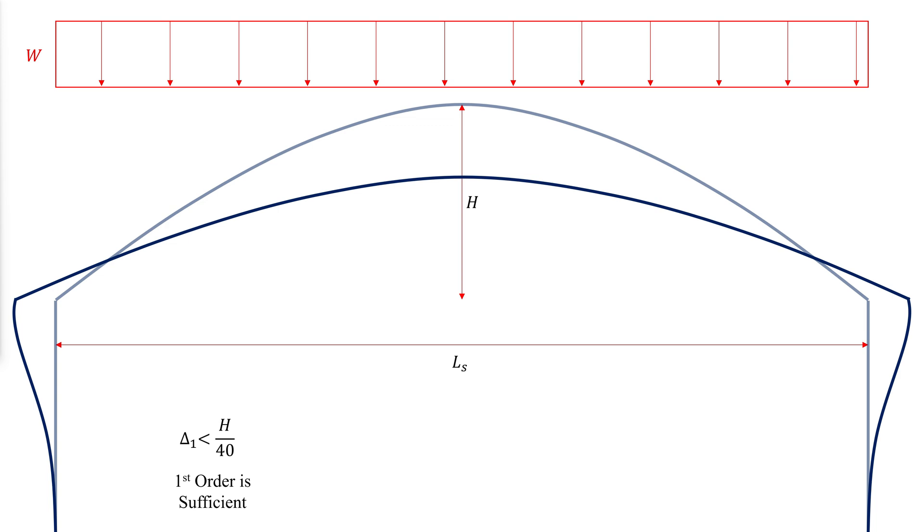If the first order deflection, delta 1, calculated using factored loads for LRFD is less than H over 40, a first order analysis is sufficiently accurate.